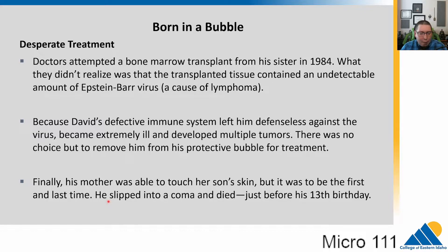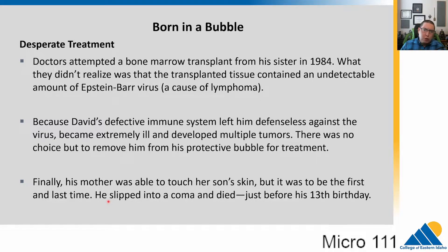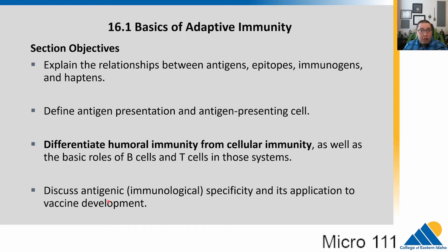This adaptive system allows us to withstand a huge number of microbes in our everyday environment. People ask me if being a microbiologist makes me a germaphobe, and the answer is no — because I have an immune system. Without one, I would be very afraid of microbes, but in everyday life we have our immune system to deal with these. In section 16.1, we'll start with the basics — the cell types and the two branches of the adaptive system.